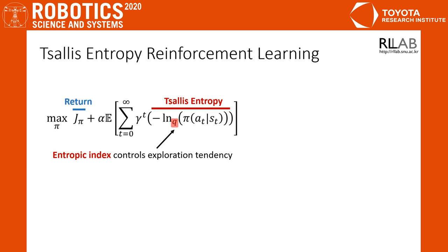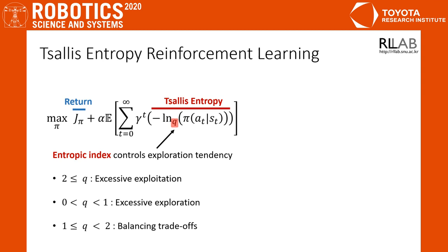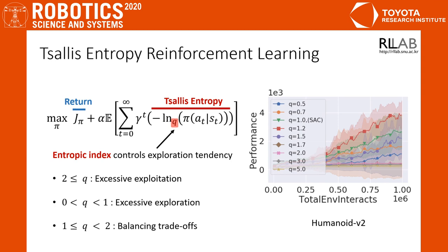In the simulation study, we find that there exists some proper ranges of the entropy index. q between 1 and 2 generally shows better performance than other ranges. Especially q equals 1.5 shows the best performance in various benchmark simulations. Other ranges such as q greater than 2 or less than 1 show poor performance in general.